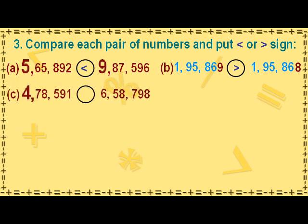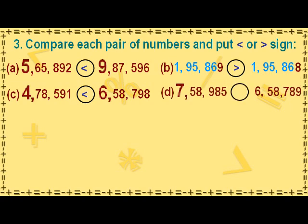The digit 4 in the lakhs place value in the first number is smaller than the digit 6 in the lakhs place value in the second number, so we put the less than sign after the first number. The digit 7 in the lakhs place value in the first number is greater than the digit 6 in the lakhs place value in the second number, so we put the greater than sign after the first number.